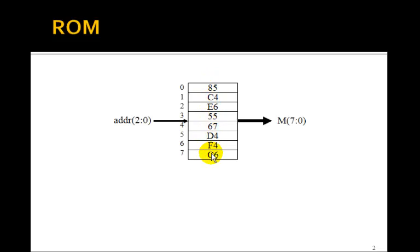Each memory location contains a byte, and the output of the ROM is M, 7 down to 0. So if the input address is 3, the output M will be 55. If the address is 1, out comes C4. If the address is 7, out comes C6. So these are permanent values stored in this read-only memory.